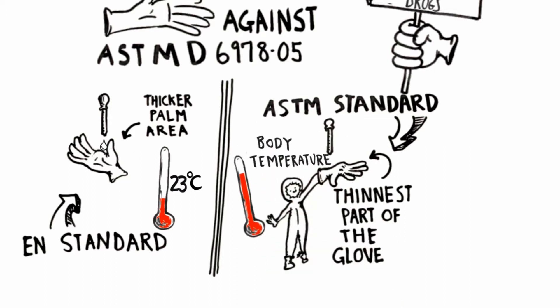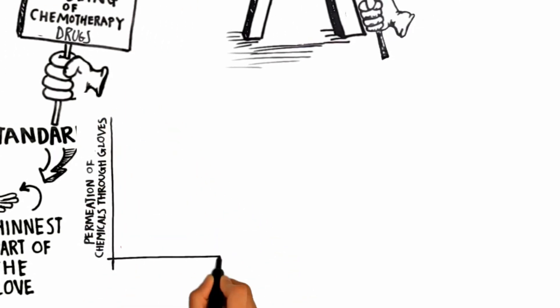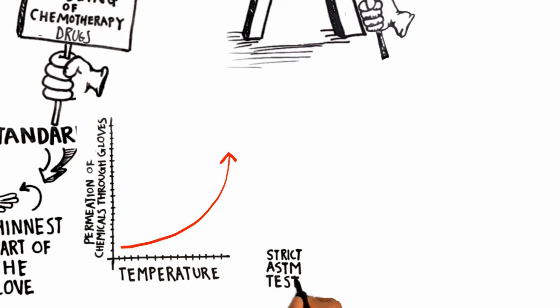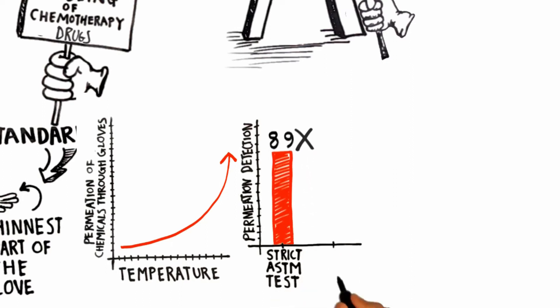This is important as the permeation of chemicals through gloves increases exponentially at higher temperatures. The strict ASTM test standard also means that the permeation detection levels are set at 100 times greater than that of the EN standard.